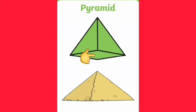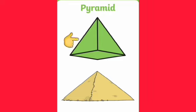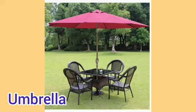A pyramid has a flat square surface and it has five faces and five vertices, which are also known as corners. The five faces of a pyramid are in the shape of a triangle. Let's see some examples — an umbrella which is in a pyramid shape, which is generally seen in a cafe.